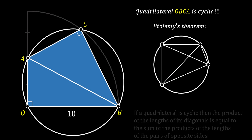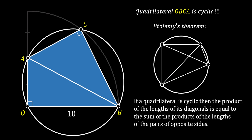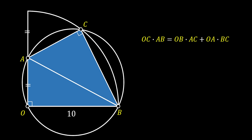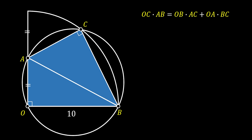This is important because Ptolemy's theorem applies to cyclic quadrilaterals and their diagonals. It states that if a quadrilateral is cyclic, then the product of the lengths of its diagonals equals the sum of the products of the lengths of the pairs of opposite sides. Labeling our quadrilateral the same way, we can say the product of diagonals OC and AB equals the sum of the products of the opposite sides.